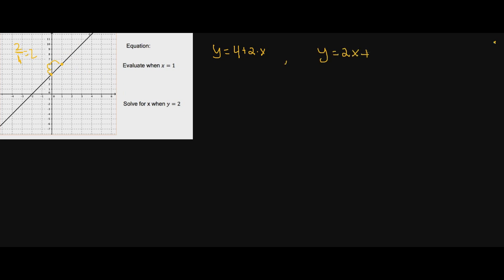We can rewrite this equation as y equals two x plus four — it's really just up to you to decide what you prefer. When it says evaluate when x equals one, this means we want to plug in one for x and look at the graph. When x is one, what is your y value? It's right here — when x is one, my y value is six.